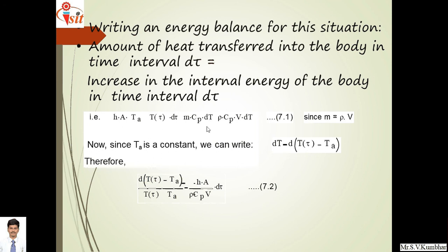Since Ta is a constant, dT = d(T(τ) − Ta). Rewriting this equation: d(T(τ) − Ta) / (T(τ) − Ta) = −(h·A / ρ·cp·V) · dτ. This equation is very important.